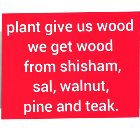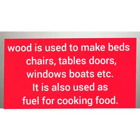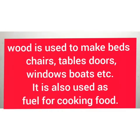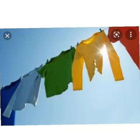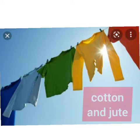We get wood from trees like walnut, pine, and teak. Wood is used to make beds, chairs, tables, doors, windows, and boards. Wood is also used as fuel for cooking food. Now, fibers — fiber means these clothes. We get fibers like cotton and jute from plants.